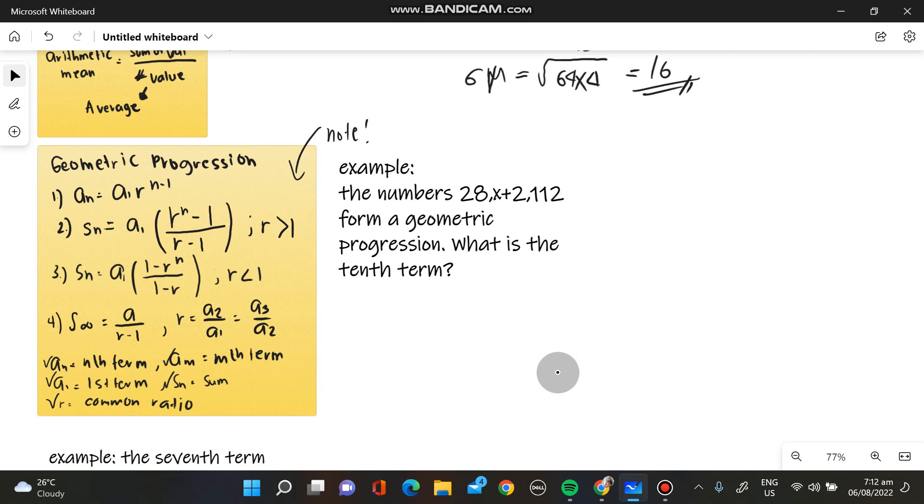So we have a sample here. The sample, the numbers 28, X plus 2, and 112 form a geometric progression. What is the 10th term? So we need to find the 10th term in this problem. So we have the given, our given are 28, X plus 2, and then 112.